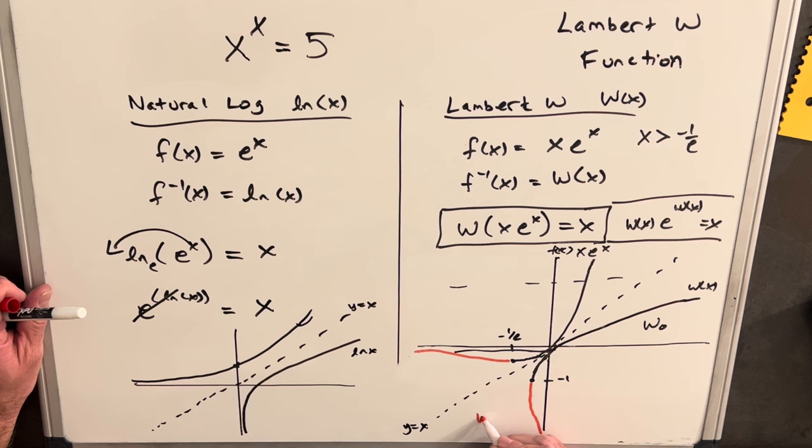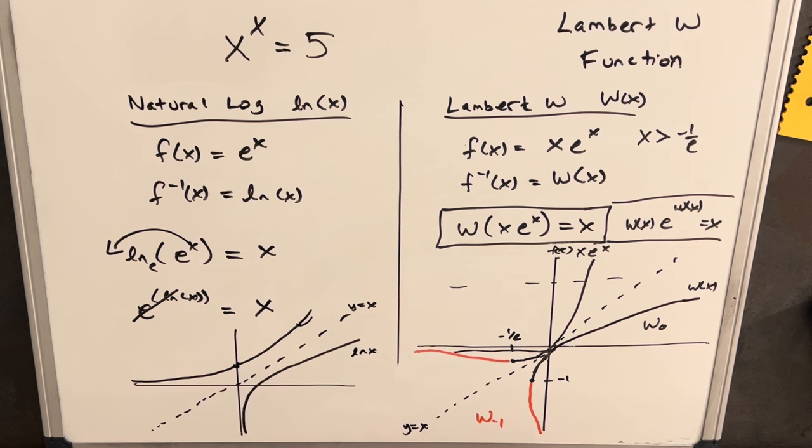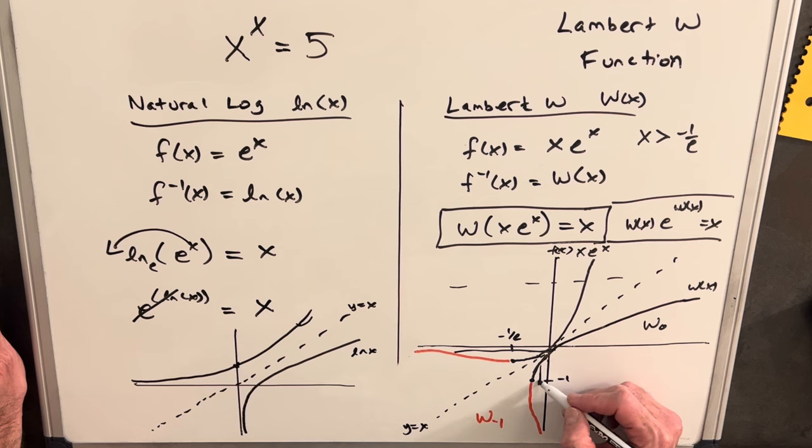And then occasionally we'll use this other branch in red. This is on Wolfram Alpha W minus one, because things get a little complicated if we're in this area here where we end up with these two real values.